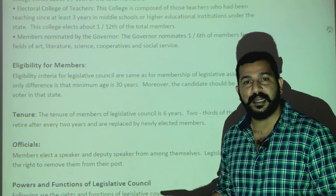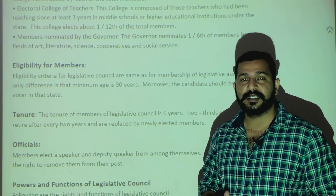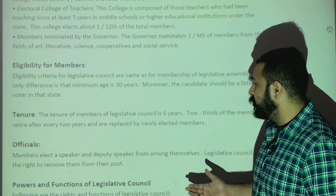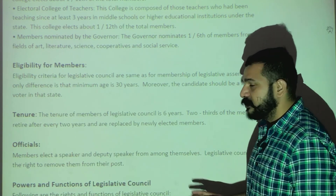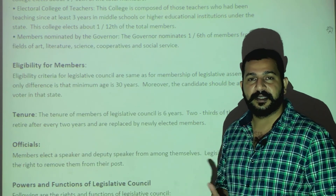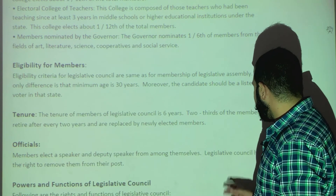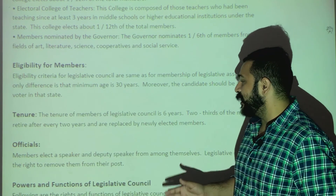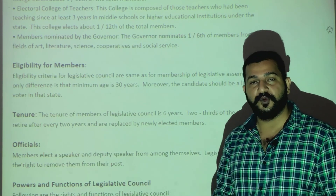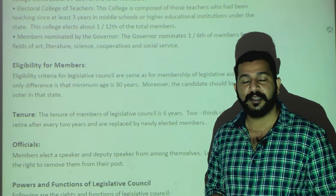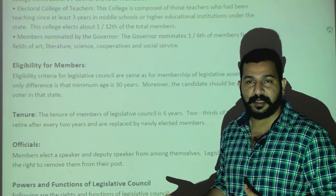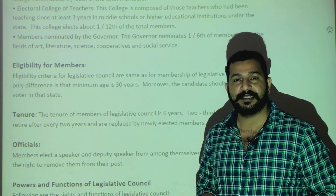Regarding the officials: the head of the Legislative Assembly is the Speaker and Deputy Speaker. For the Legislative Council, the members elect a Chairman and Deputy Chairman from among themselves — this is similar to the assembly. The Legislative Council has the right to remove the Chairman or Deputy Chairman from their posts.